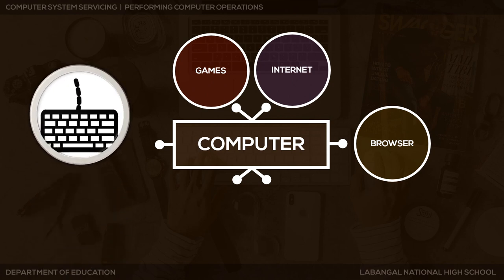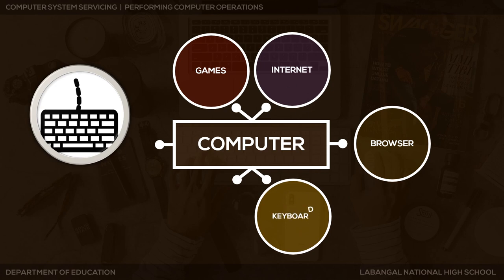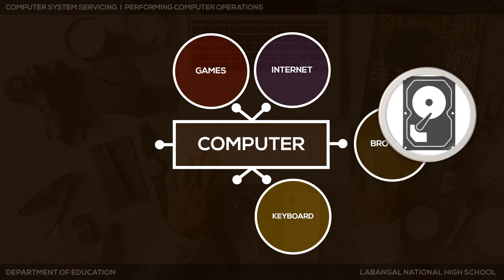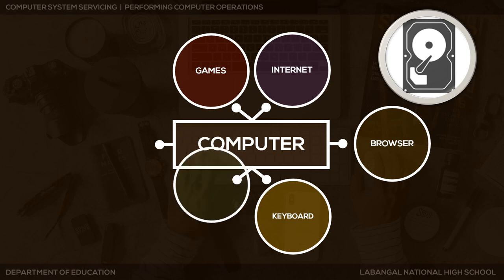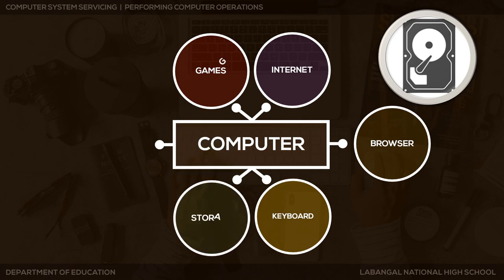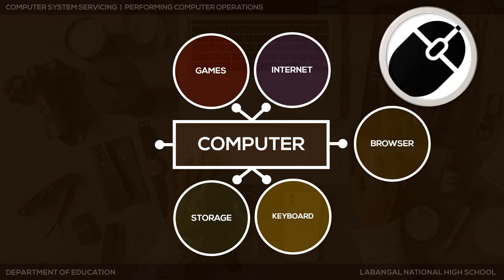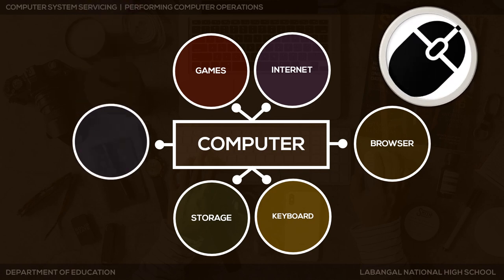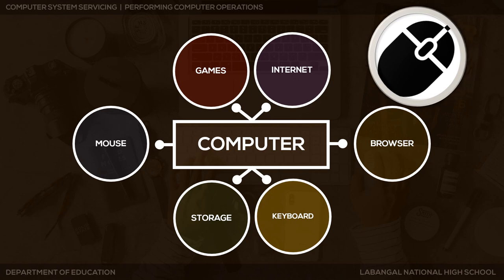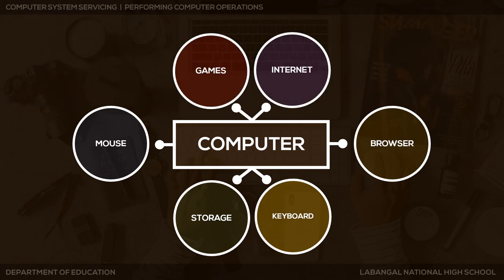What is this? There are lots of keys. Correct — that is a keyboard. This one looks like a disk — it's storage. And that is a mouse. So now you have an idea of what our lesson is going to be.